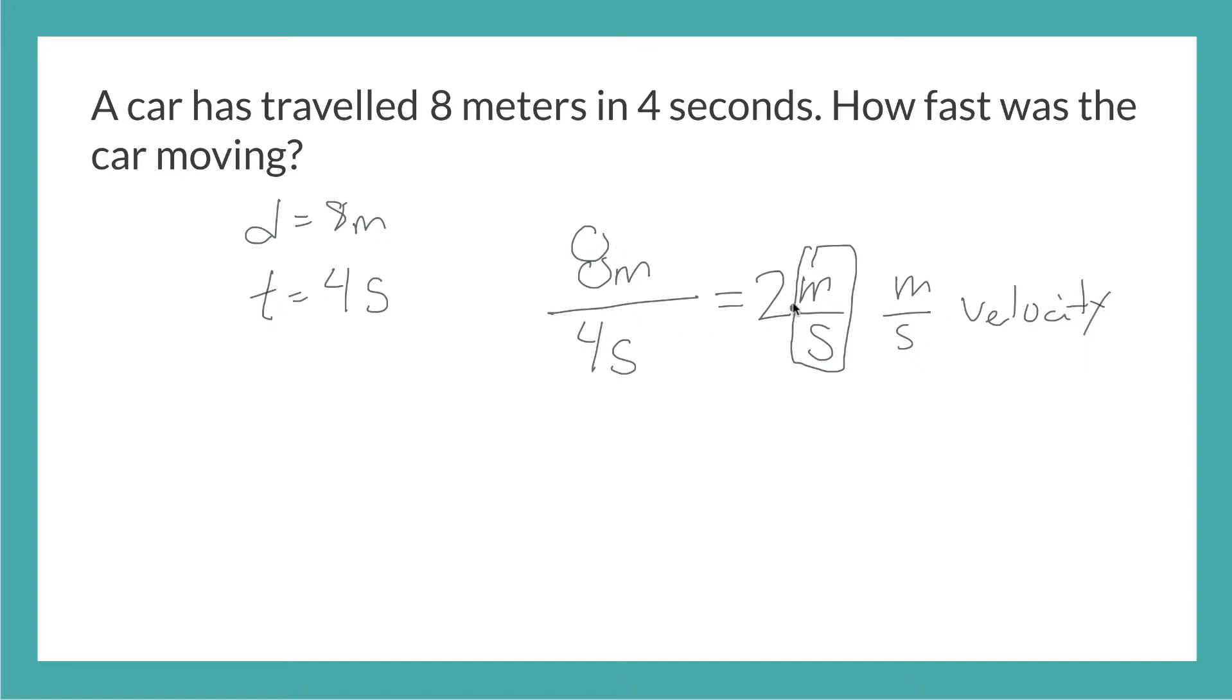So in a way, we already found out how fast the car was moving. It's moving 2 meters for every 1 second, which is the same as saying 8 meters for every 4 seconds. So here, we showed how using the units for distance, 8 meters, and the units for time, 4 seconds, could give us the units for velocity.